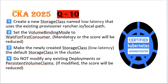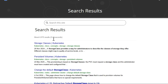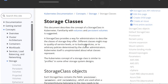The question is straightforward. We need to create a storage class with the given name, set the volume binding mode to 'WaitForFirstConsumer', verify it after creating, and finally set the storage class as the default one. First, we'll go ahead and check the Kubernetes documentation.